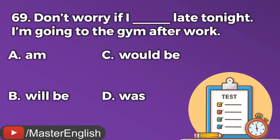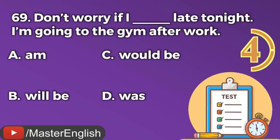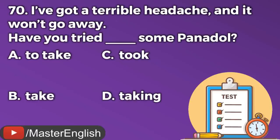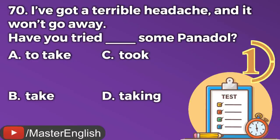Question number sixty-nine. Don't worry if I ___ late tonight — I'm going to the gym after work. A: Am. B: Will be. C: Would be. D: Was. The correct answer is A: Am. Don't worry if I am late tonight. Question number seventy. I've got a terrible headache and it won't go away. Have you tried ___ some Panadol? A: To take. B: Take. C: Took. D: Taking. The correct answer is D: Taking. Have you tried taking some Panadol?